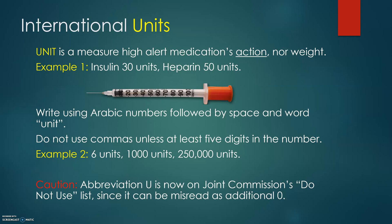International units are used for measuring high-alert medications and measure the action, not the weight. Example: insulin 30 units, heparin 50 units. Insulin is the medication for people with diabetes, and heparin is a blood thinner.